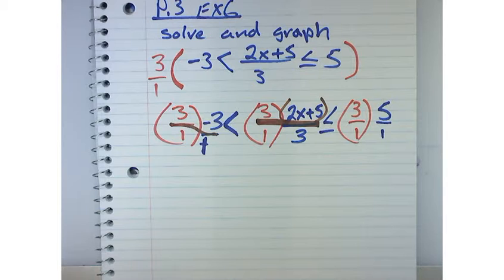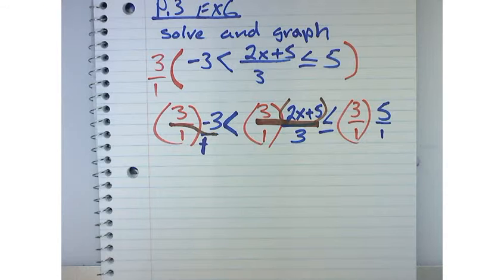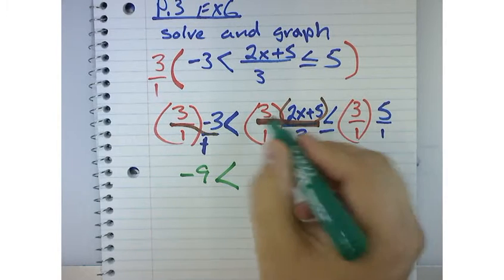Some things will cancel out. Some things won't. So this one, 3 times negative 3 is negative 9, right? Is less than. Now what happens with this 3 and this 3?